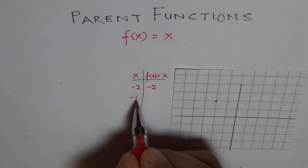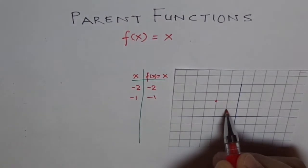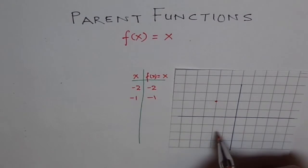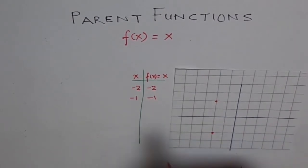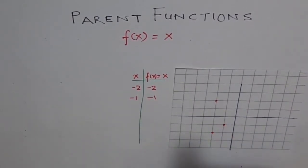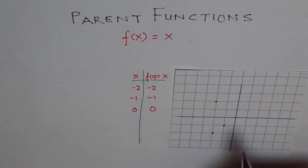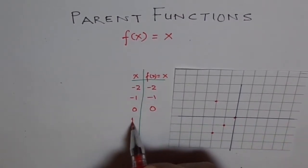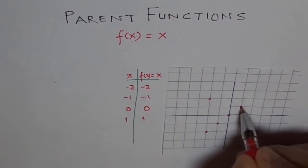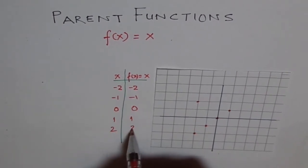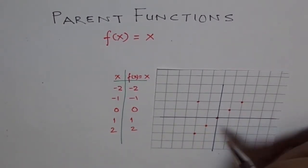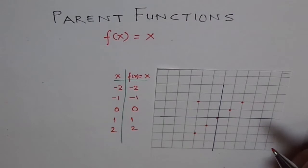At minus 1 we have minus 1. At 0 we have 0. At 1 we have 1. At 2 we have 2. So these are critical values for our function.